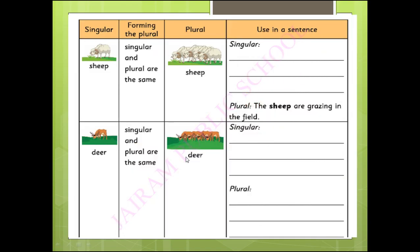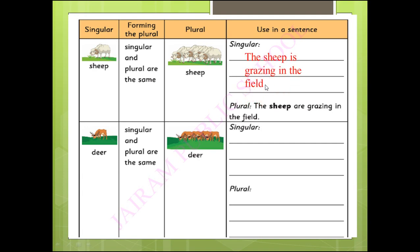Here is an exercise given in your book. Sheep — the singular and plural form for sheep is the same: sheep. We cannot add S or ES; this is the rule in grammar. The singular sentence: 'The sheep is grazing in the field.' The plural form: 'The sheep are grazing in the field.' When it is many, we use the verb 'are'.